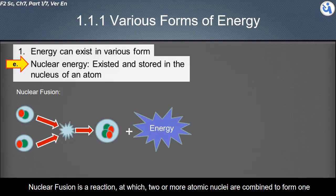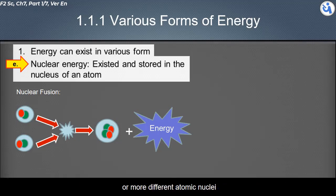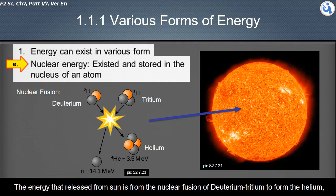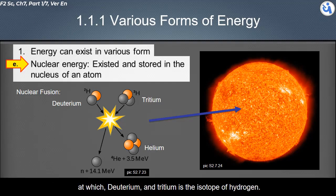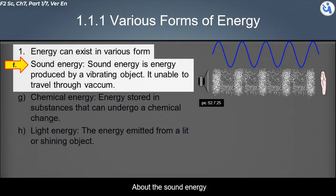Nuclear fusion is a reaction in which two or more atomic nuclei are combined to form one or more different atomic nuclei. The energy released from the Sun comes from the nuclear fusion of deuterium and tritium to form helium, where deuterium and tritium are isotopes of hydrogen.